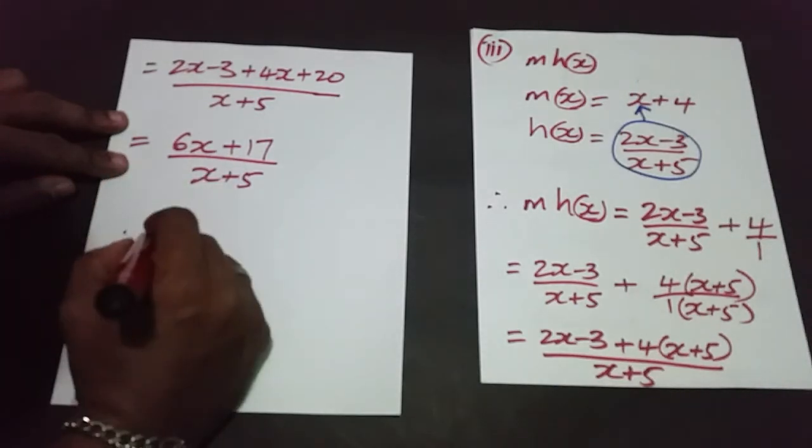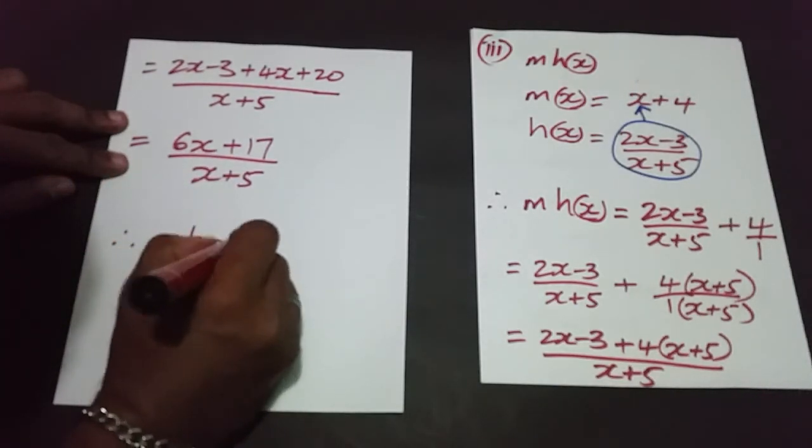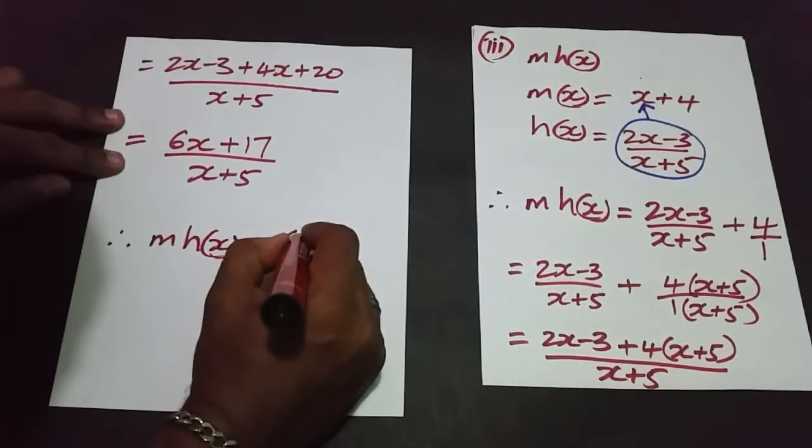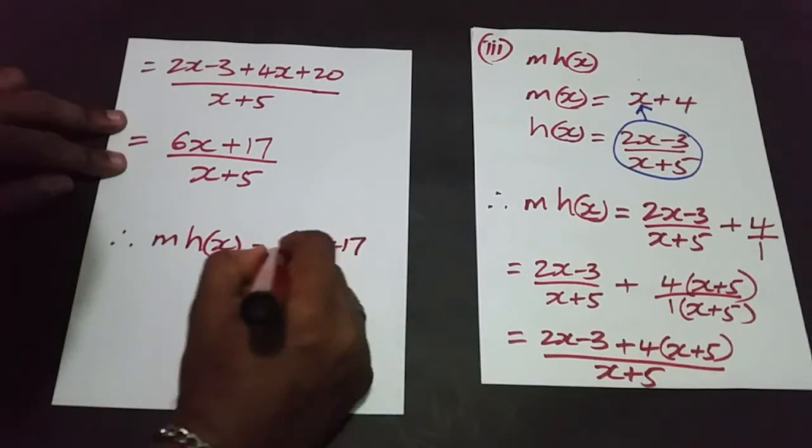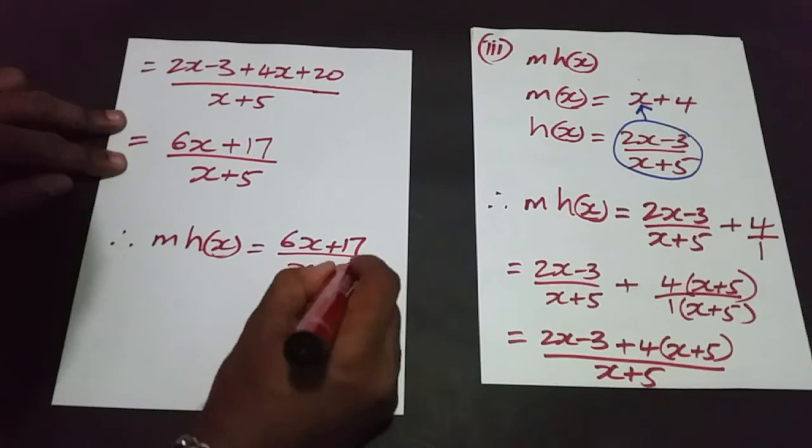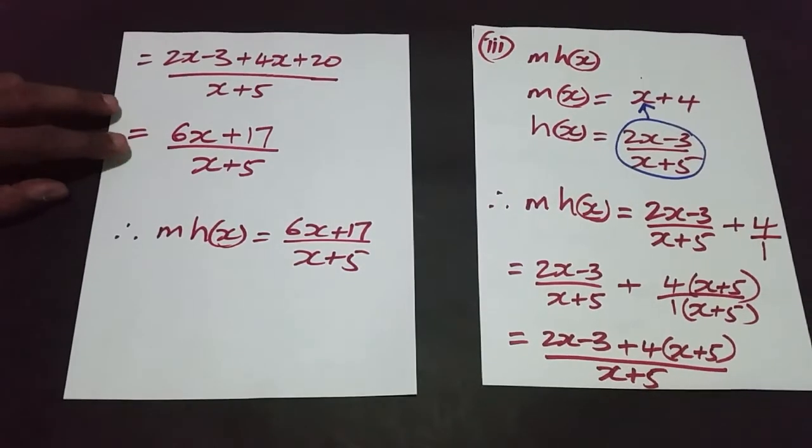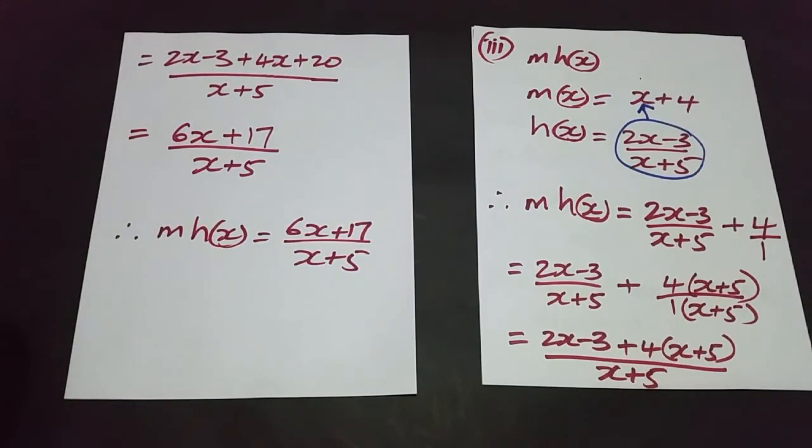And we have done that, and we're just checking to see if it can be simplified any further. It can't. So therefore m of h of x is simply 6x plus 17 all over x plus 5. And that will be the answer to part 3 of the question.